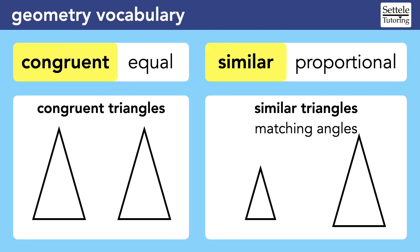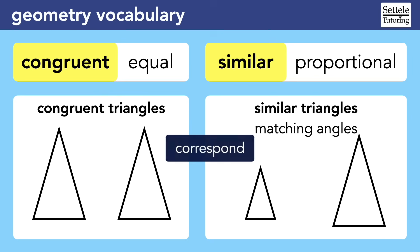When comparing two shapes, we might say that they are congruent or similar. Congruent shapes are identical — they have matching sides and matching angles. Similar shapes are proportional: they are different sizes, but they still have matching angles, and the sides will be in proportion, meaning the size difference is consistent. In both cases, it's important that you pay attention to which sides and angles correspond.